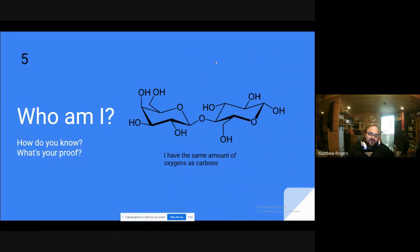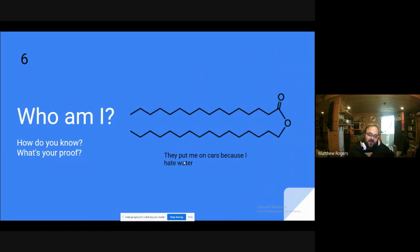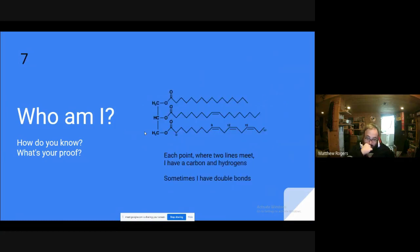I have the same amount of oxygens as carbons. Again, trying to get you to think about this as carbohydrate. They put me on cars because I hate water. Obviously we are lipid here, but I'm trying to hopefully you can pinpoint a little bit further down. What do we put on cars because they hate water? And that's wax. Now what's ironic here is technically why wax is so effective is these oxygens here. They love the metal of the car and they'll connect. And then these guys will lay flat and stick out and water can't connect to the metal because the water likes metal too. So this guy kind of is slightly polar here, which is just enough of a magnet to stick to the car, but then this guy keeps the water off. Each point where two lines meet I have a carbon hydrogen. Sometimes I have double bonds. So this is unsaturated fat, which is a lipid.